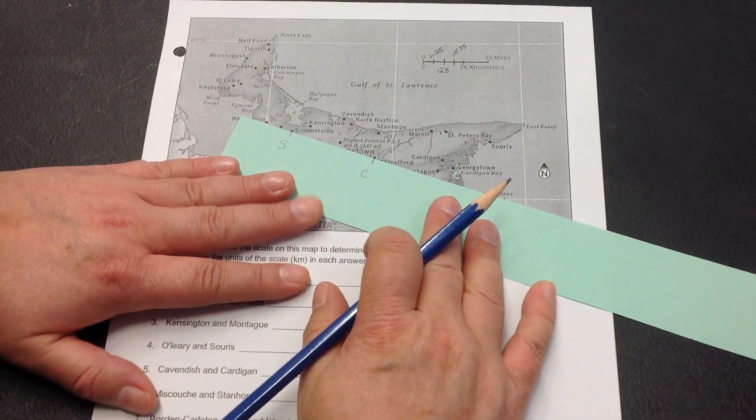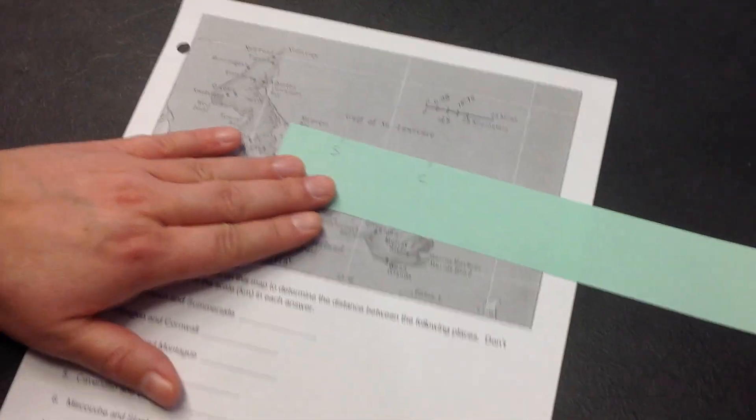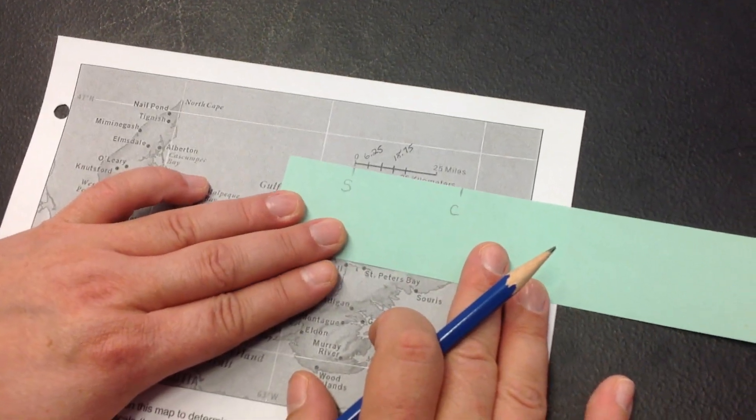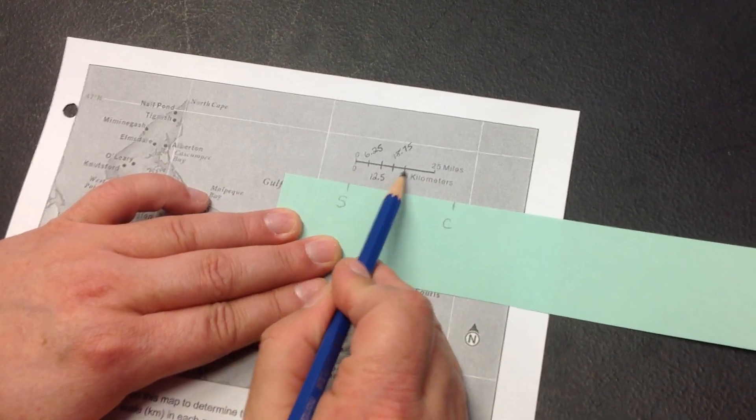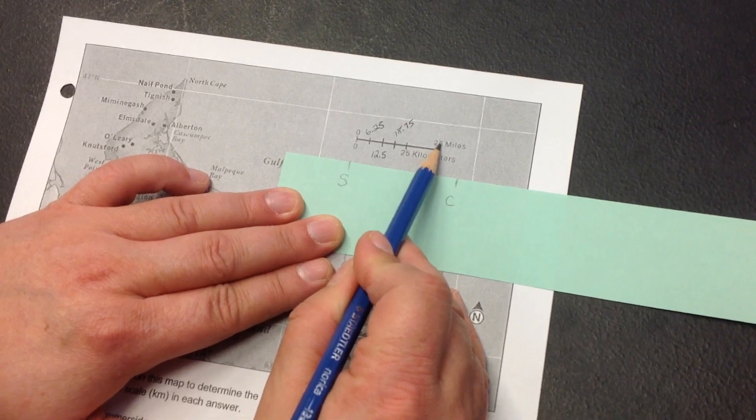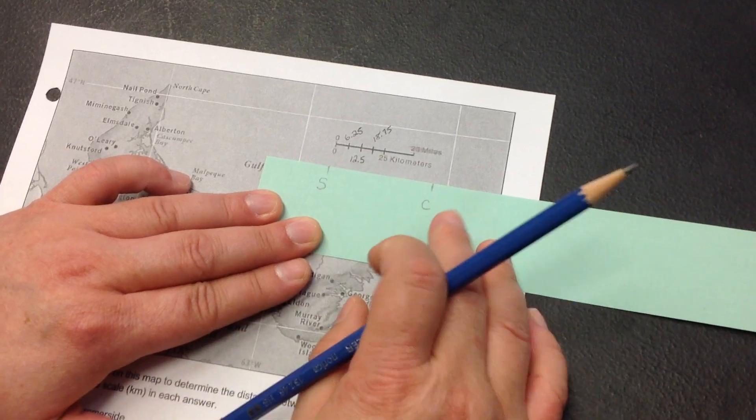Now, we need to use the scale. We're going to slide this paper up to the scale so that the S is on zero. We're using 25 kilometers. We're not going to use 25 miles because we are in Canada and we use kilometers.